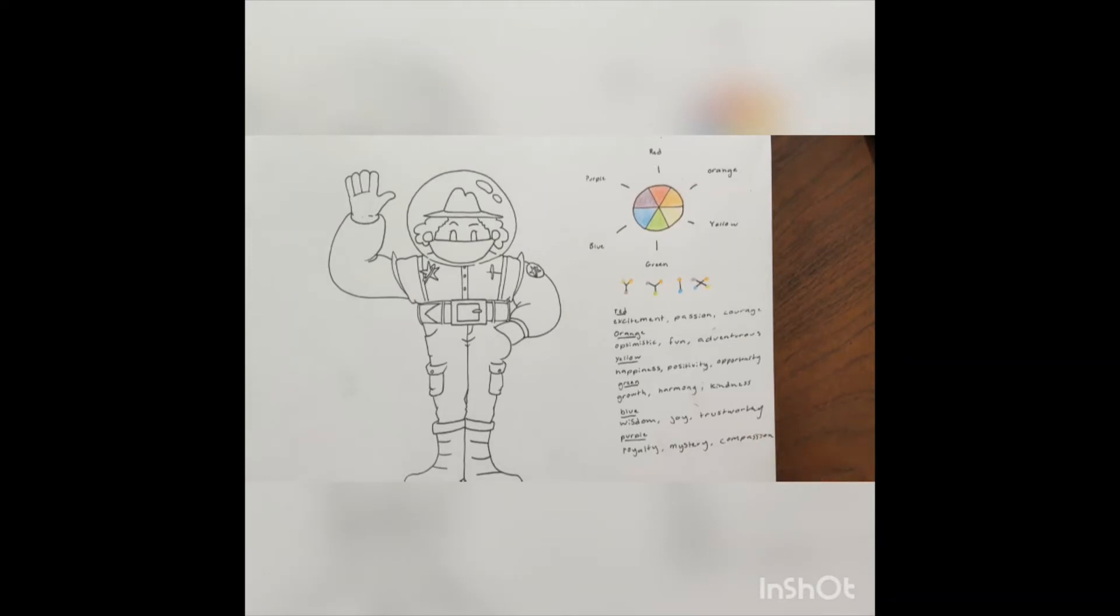Now we're going to talk about color theory. So when we're making our characters, sometimes we think about what each color means before we put it on them. If we've got a character and they're very excitable, very passionate about what they do and very courageous, we might use red in their character design. We might use orange to make them seem a bit more fun, more adventurous and optimistic. Or yellow for happiness - maybe they're very positive or they're always looking for opportunities to do things and trying to be overall happy with what they do.